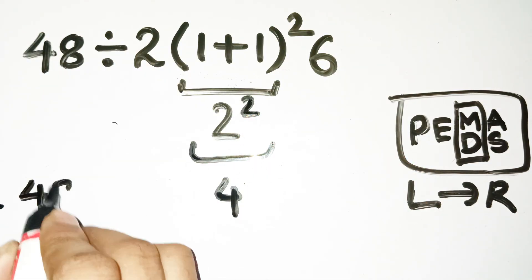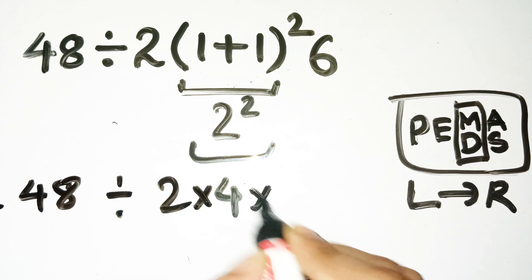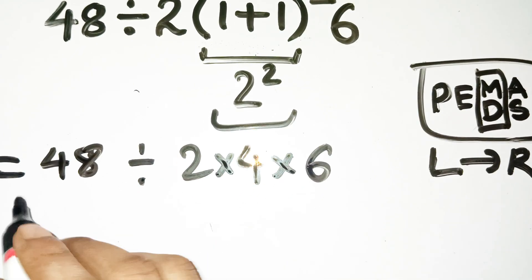Now our expression becomes 48 divided by 2 times 4 times 6. No parentheses now, so we go left to right.